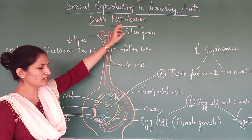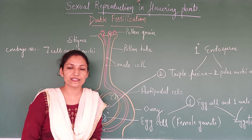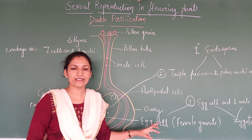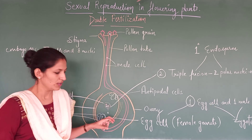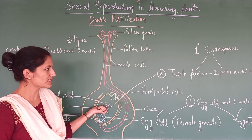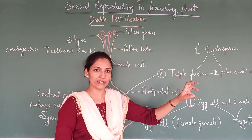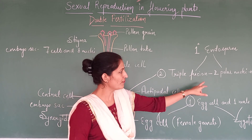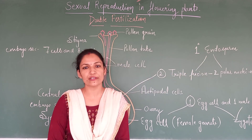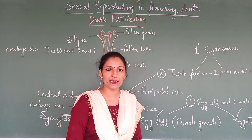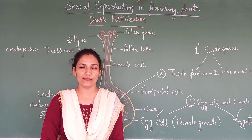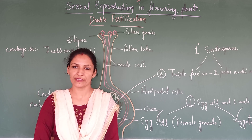So as it is double fertilization — the characteristic process of flowering plants — one male gamete fertilizes the egg cell, the female gamete, to form the zygote. And the second male gamete undergoes triple fusion with the central cell, where 3 nuclei fuse, to form the primary endosperm cell, which will make the endosperm — a nutritive tissue. And the zygote will make the embryo, which will give rise to the future plant. So this is all about double fertilization. Thank you.